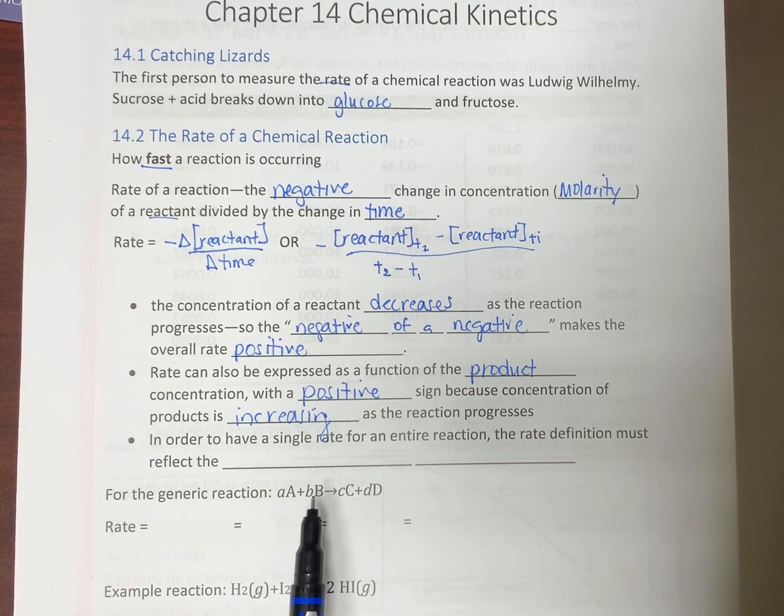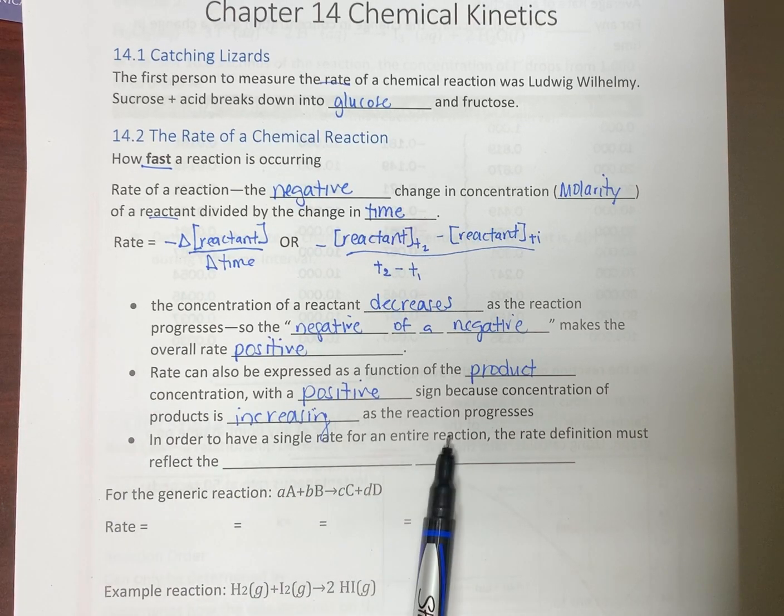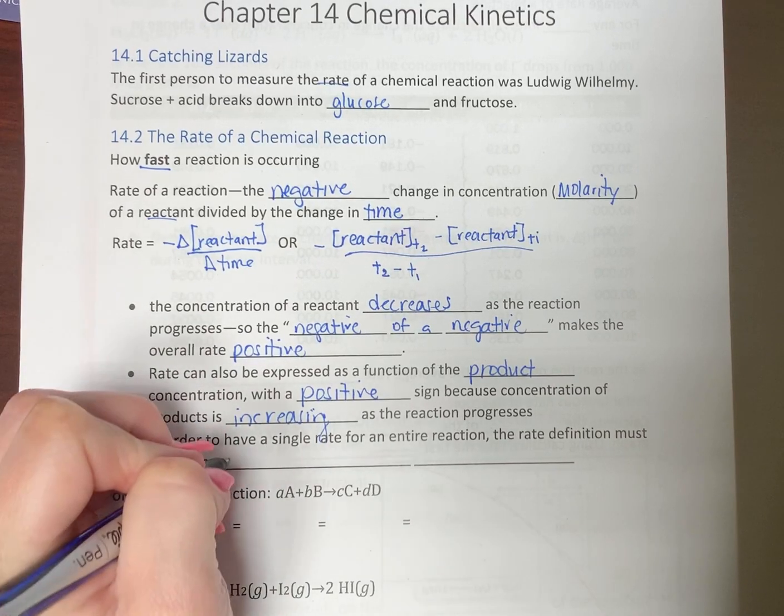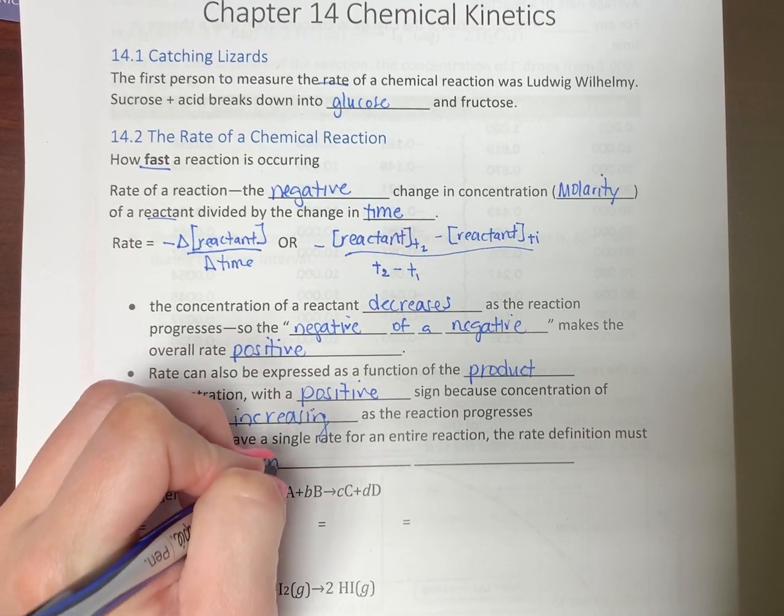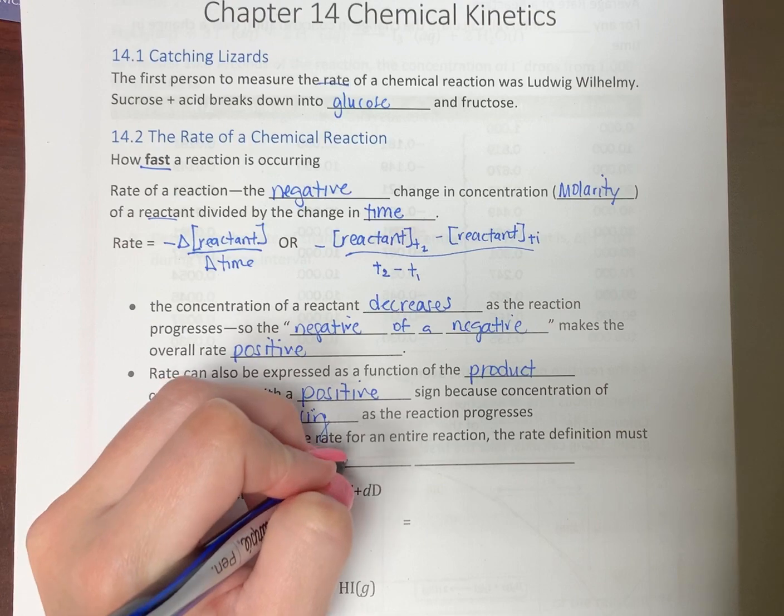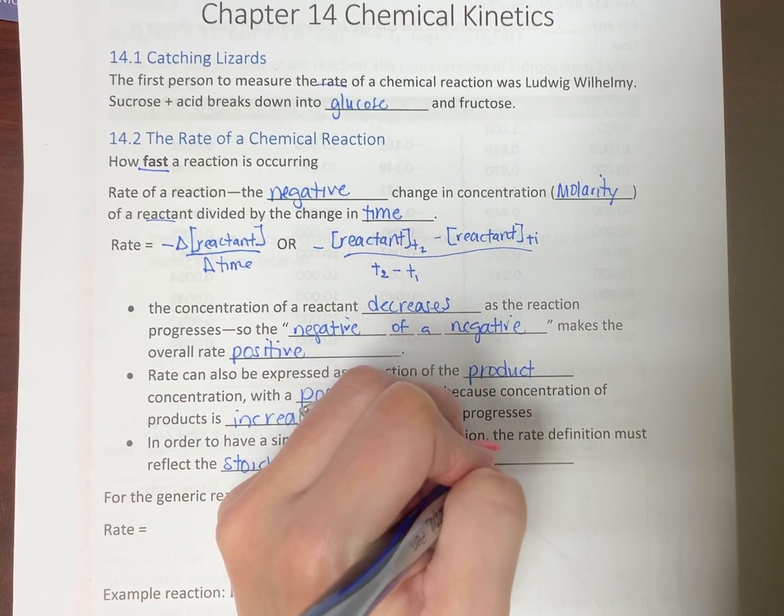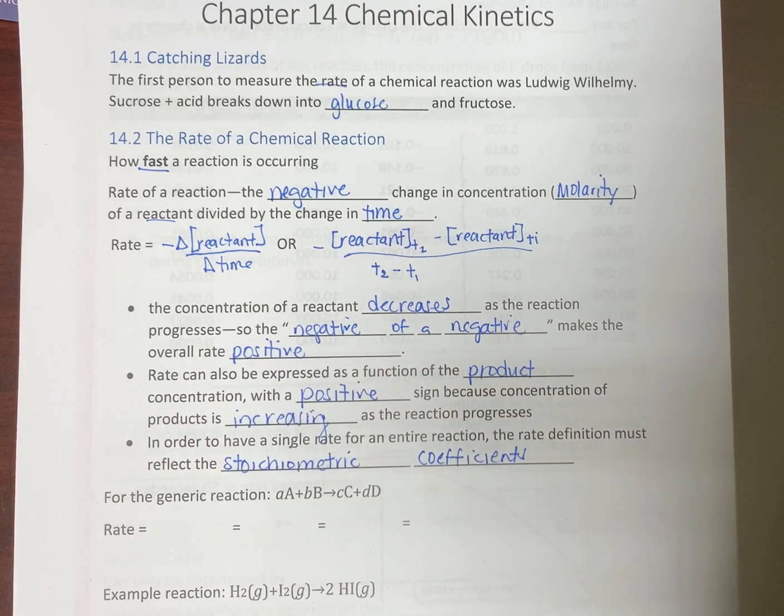Products are always positive because the concentration of products is increasing as we're moving along in the reaction. So it is important here. We're going to use everybody's favorite word. When we have a single rate, an overall rate for the entire reaction, the rate definition that we're going to come up with has to reflect the stoichiometric coefficients. You know what that means. We've got to have a balanced equation.